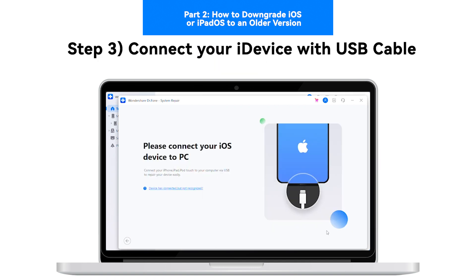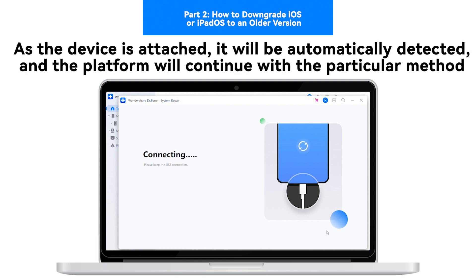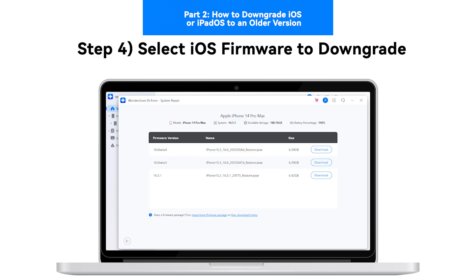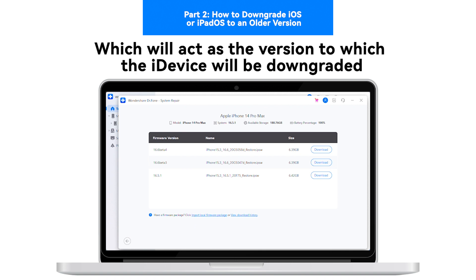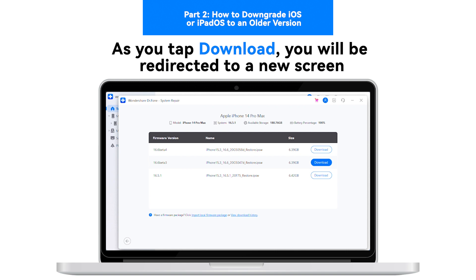Step 3 — Connect your iDevice with a USB cable. As the device is attached, it will be automatically detected and the platform will continue with the particular method. Step 4 — Select iOS Firmware to Downgrade. Select the best iOS firmware option from the options on the next screen, which will act as the version to which the iDevice will be downgraded. As you tap Download, you will be redirected to a new screen.